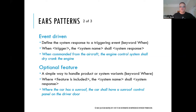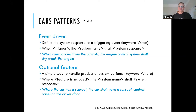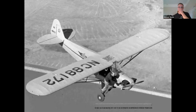Optional feature requirements handle product or system variation using the keyword 'where.' Requirements are only applicable if a particular feature is included. The form is: where a feature is included, the system name shall system response. For example: 'Where the car has a sunroof, the car shall have a sunroof control panel on the driver door.' There would be no point in having that control panel if the car didn't have a sunroof, so it's only applicable in that circumstance.